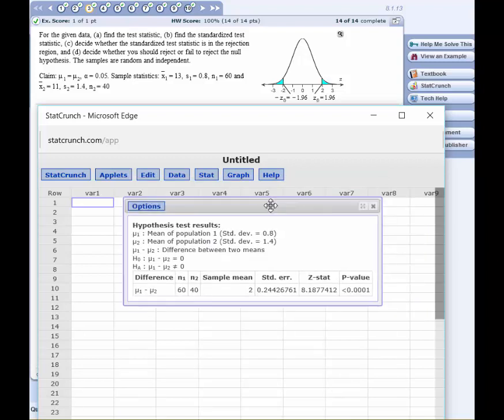And we get these results: the standard error, the Z-statistic of 8.1877, and a p-value of less than 0.001. So right off, we can look at the p-value and know that it is a significant test, and therefore we reject the null.